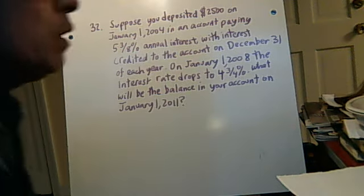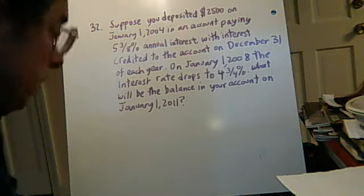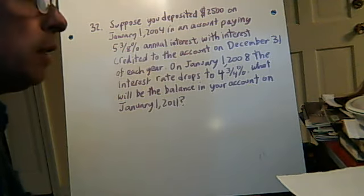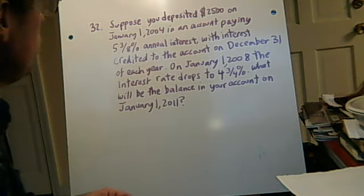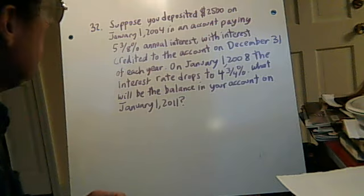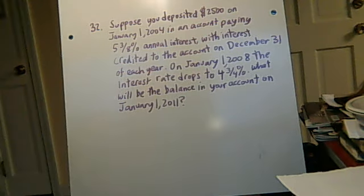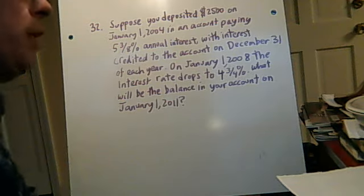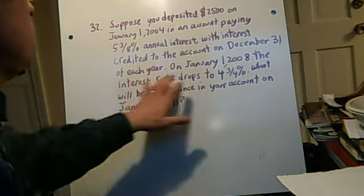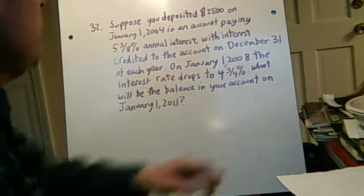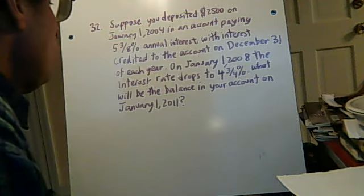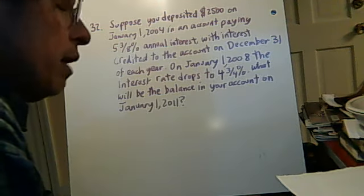This is problem number 32, and this concerns interest in a savings account. Suppose you deposited $2,500 on January 1, 2004, in an account paying 5.38% annual interest, with interest credited to the account on December 31st of each year. On January 1 of 2008, the interest rate drops to 4.75%. What will be the balance in your account on January 1, 2011?